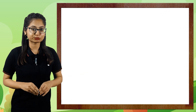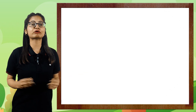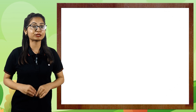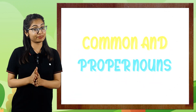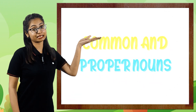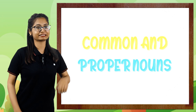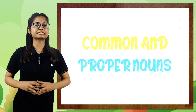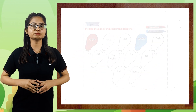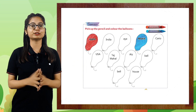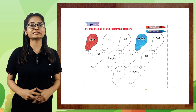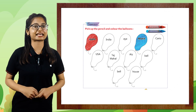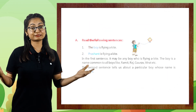Hello and welcome back students. I'm your English grammar digital mentor and I'm here with chapter number six. The topic is common noun and proper noun. So let's start — without getting late, let's read the starter first. Pick up the pencil and color the balloons. Now it's your favorite thing, pick up your favorite crayons and start coloring.